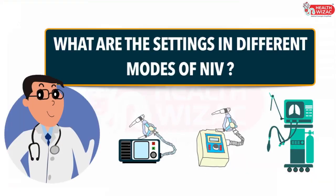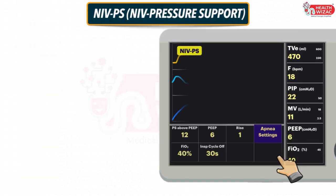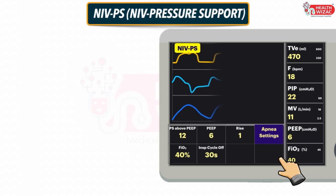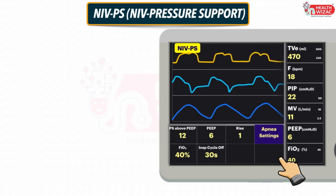What are the settings in different modes of NIV? First, NIV Pressure Support. If a ventilator is used for NIV Pressure Support, then we have to set the following settings: PS above PEEP value, PEEP value, Rise Time, FiO2, Inspiratory Cycle Off Time, and Apnea settings for backup ventilation.